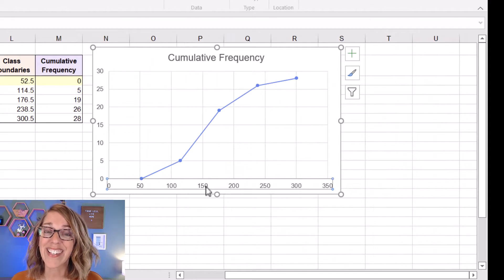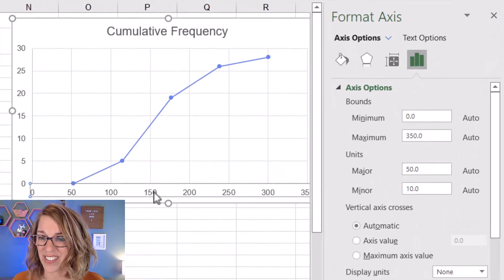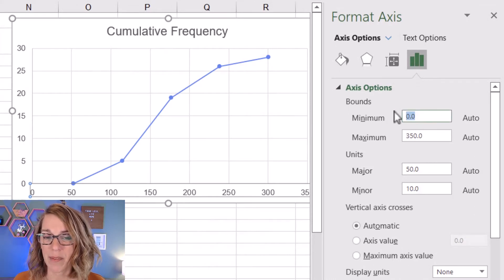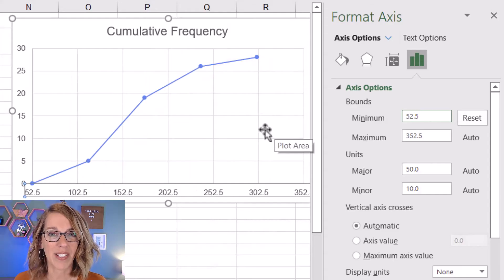Moving this over, I can see that I have a decent looking ogive or cumulative frequency polygon, but I want those labels on the horizontal axis to be my class boundaries instead. So let's change that. I'm going to double click on those labels, just anywhere along the axis labels, and it brings up my options. So my bounds, I'm going to change that minimum to that lowest class boundary, which was 52.5. And you can leave the maximum there.